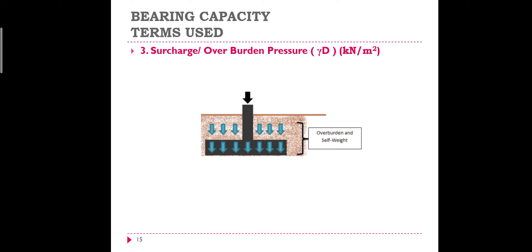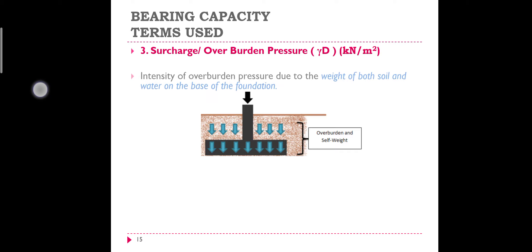The overburden pressure is represented as γD. We know that stress is equal to γH, where ρg is nothing but γ, so pressure equals ρgH. Similarly, overburden pressure is γ multiplied by D, where D is the depth of the footing. Instead of H we put D, giving γD. So overburden pressure or surcharge is equal to γD.